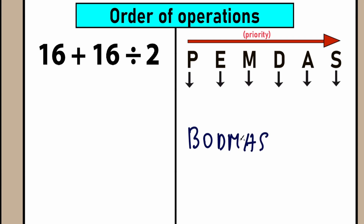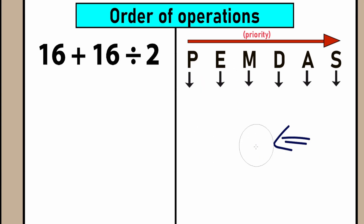The order of operation for brackets, orders, division, multiplication, addition, subtraction is the same for both PEMDAS and BODMAS. BODMAS is mainly used in India and the UK; PEMDAS is used in Europe, Canada, and other countries. I'm going to use PEMDAS because the meaning is absolutely the same and I prefer this one.